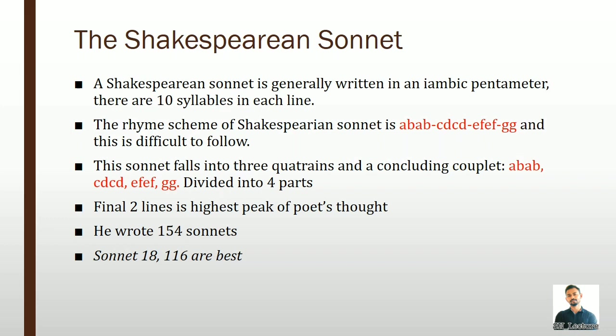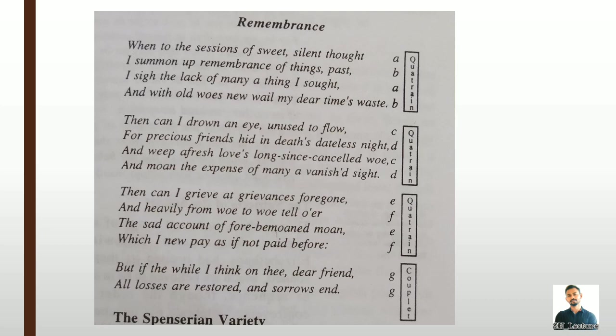An example of the Shakespearean form is the sonnet titled 'Remembrance': 'When to the sessions of sweet silent thought, I summon up remembrance of things past, I sigh the lack of many a thing I sought, and with old woes new wail my dear time's waste.' You can see the rhyme scheme a b a b — 'thought' rhymes with 'sought,' 'past' rhymes with 'waste.' The sonnet is divided into four quatrains with a concluding couplet.